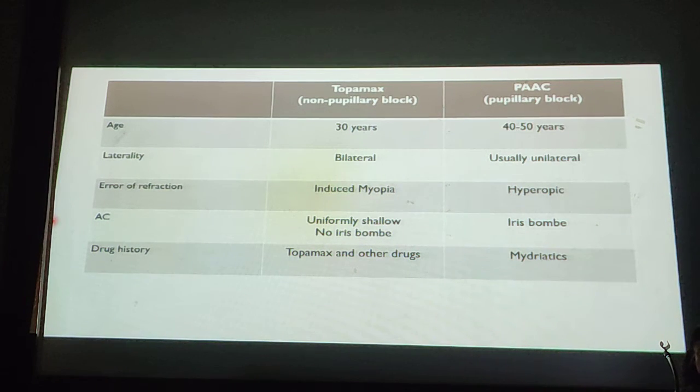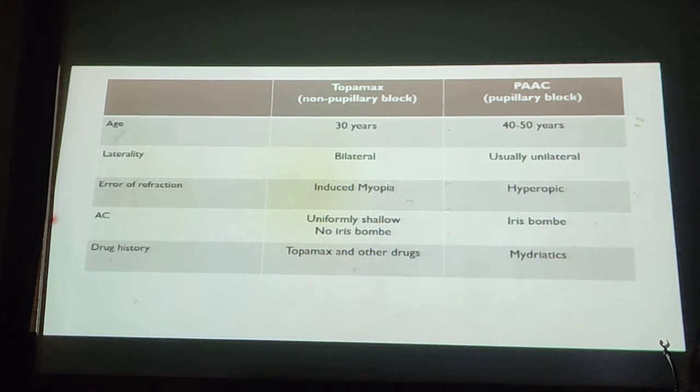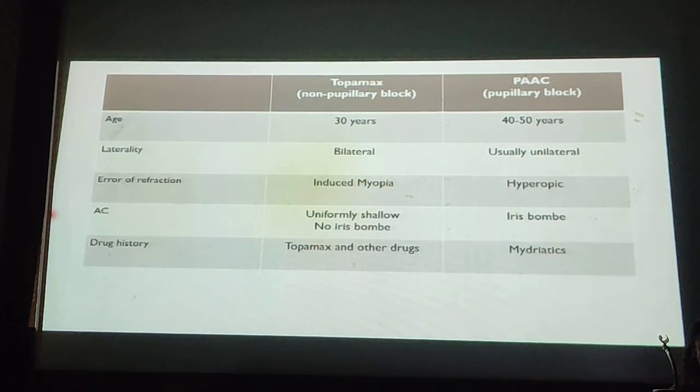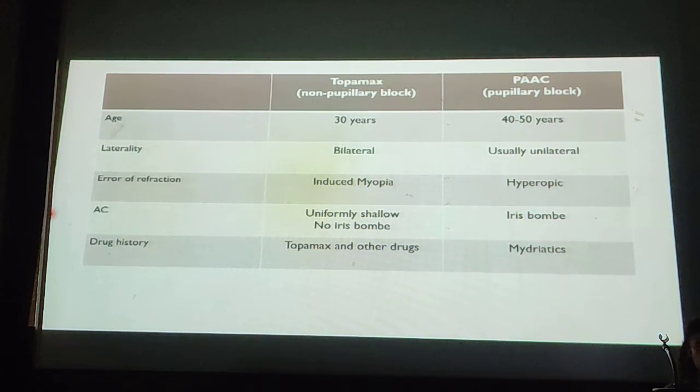In secondary acute angle closure, this is usually in middle age, because this is the age when they take these drugs for trigeminal neuralgia or for migraines. It's usually bilateral since it is a systemic drug. It induces myopia as we will discuss later. And the AC is uniformly shallow because the mechanism is primarily a non-pupillary block, and therefore there is no iris bombe.